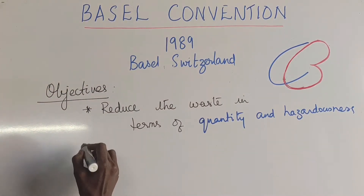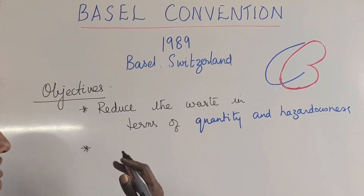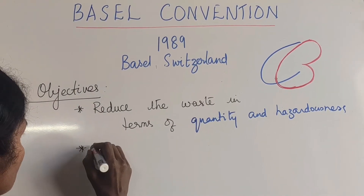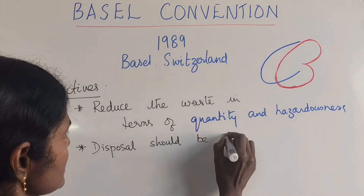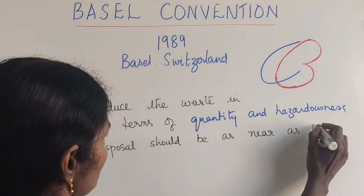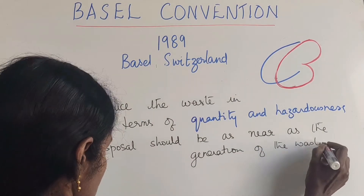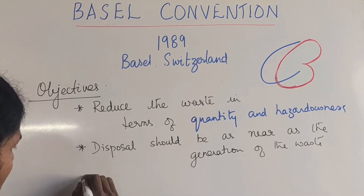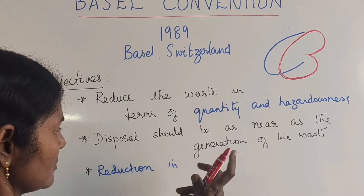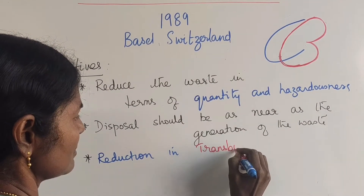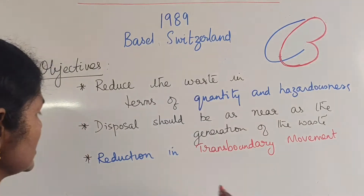The next objective relates to transportation. This trans-boundary movement usually went from one country to another, traveling by ships over long distances. So what we can do is ensure that disposal happens as near as possible to the generation of the waste. The distance is very important. There should also be a reduction in trans-boundary movement, meaning countries should try to dispose of waste internally.